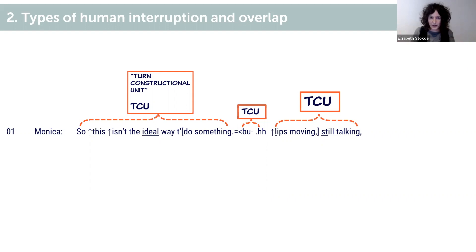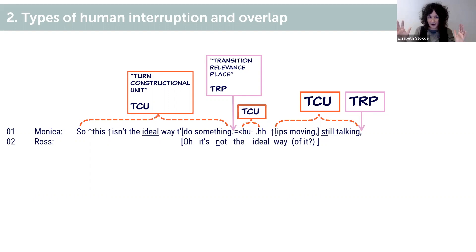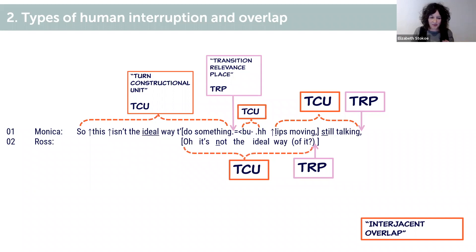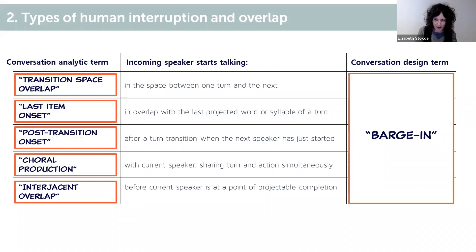As well as TCUs, the other thing that is very important for turn taking is knowing when you can take a turn. We call these moments transition relevant places — TRPs. After every transition relevance place, either the next speaker starts talking or the original speaker keeps talking. Ross's turn straddles much of Monica's turn, and we call this technically an interjacent overlap. Ross begins talking when Monica hasn't finished and produces one TCU, with a TRP at the end of it.